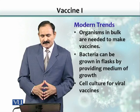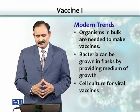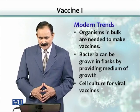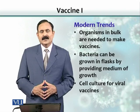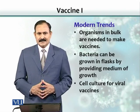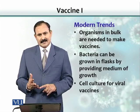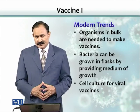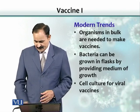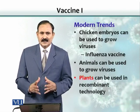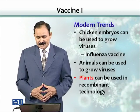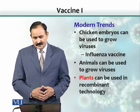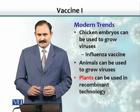Originally, organisms were produced in bulk by culturing in large flasks or containers. Cell cultures are also used for viral vaccines because viruses need live cells and multiply intracellularly. Chicken embryos are another method for mass production of viral antigens, and even animals — though costly — could also be used.